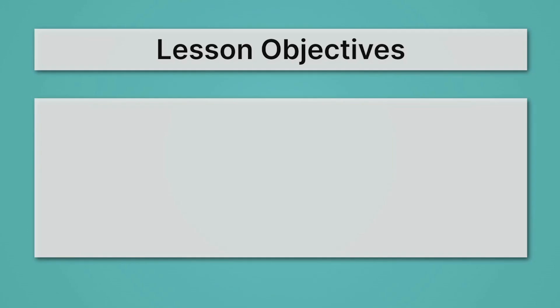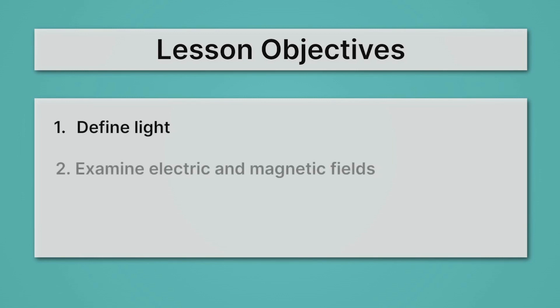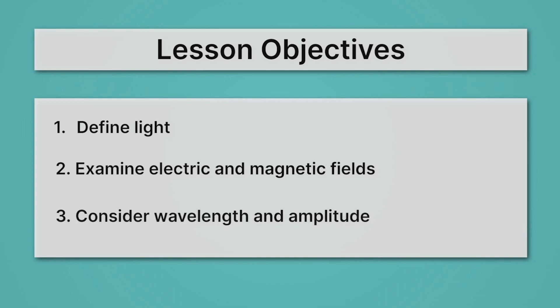Let's get this thing started by reviewing our lesson objectives. First we'll define light, then we'll examine electric and magnetic fields, and lastly we'll consider wavelength and amplitude.